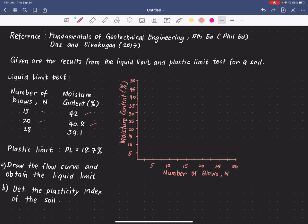And another trial having an N equals 28 with the corresponding moisture content of 39.1. So this is the result of the test using the Casagrande cup. Then the plastic limit is also performed and this gives a value of the plastic limit equals 18.7.